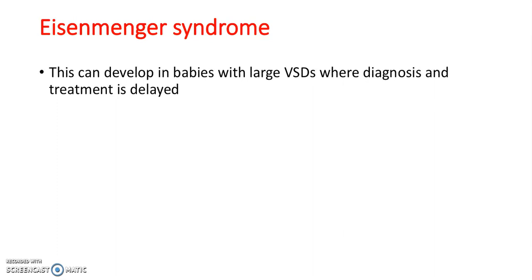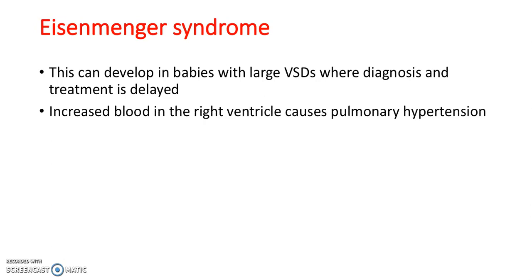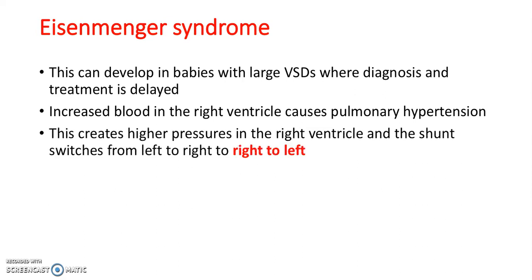What is Eisenmenger's syndrome? This can develop in babies with large VSDs where diagnosis and treatment is delayed. There is increased blood in the right ventricle, which causes pulmonary hypertension. This creates higher pressures in the right ventricle, and the shunt switches from left-to-right to right-to-left. The increased pressure in the right ventricle leads to increased pressure in the pulmonary arteries, and therefore increased pressure in the lungs themselves.